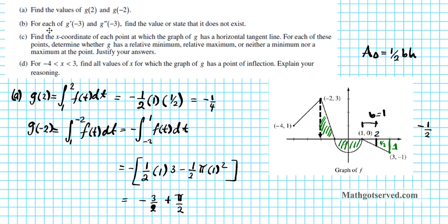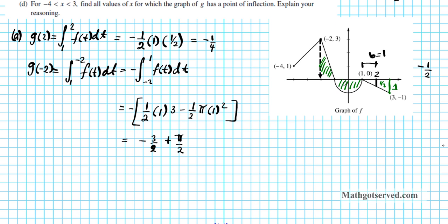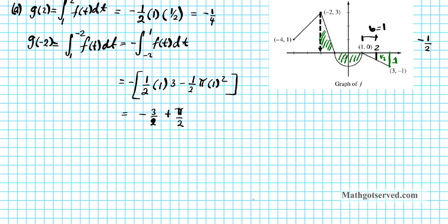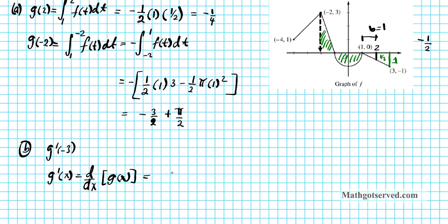Let's look at part b. For each of g prime of negative 3 and g double prime of negative 3, find the value or state that it does not exist. Let's find g'(x) first. g'(x) is the derivative d/dx of g(x), and we know g(x) is that integral expression — the derivative of the integral from 1 to x of f(t) dt. Using the Fundamental Theorem of Calculus Part 1, this derivative is simply f(x). So g'(x) = f(x).